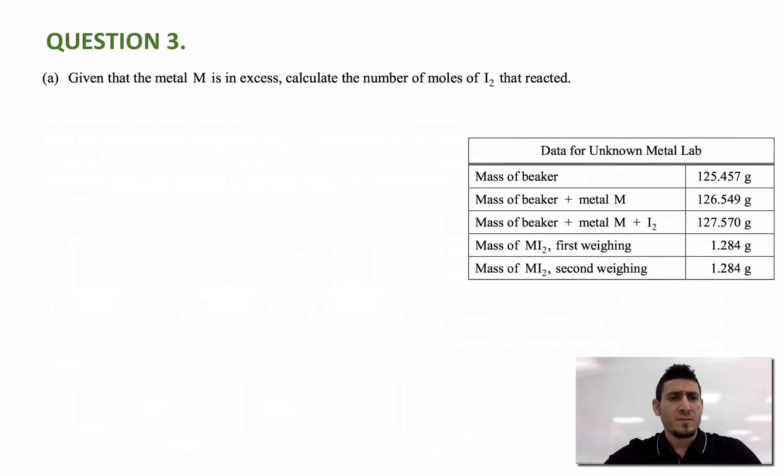The question is, given that the metal M is in excess, calculate the number of mole of I2 that reacted. To calculate the number of mole of I2, I need the mass of I2. To find the mass of I2, I can just say 127.570 minus 126.549 equals to 1.021 gram of I2. So this is the mass of I2.